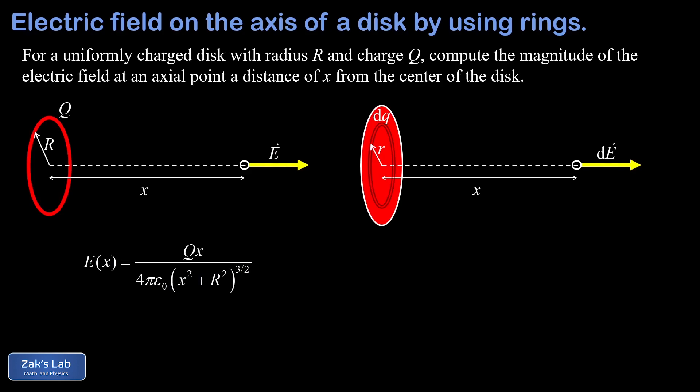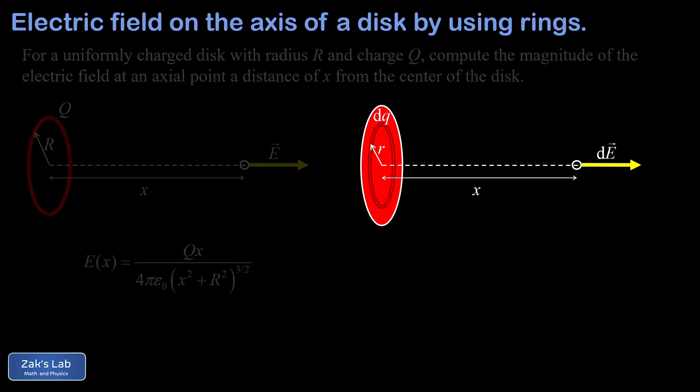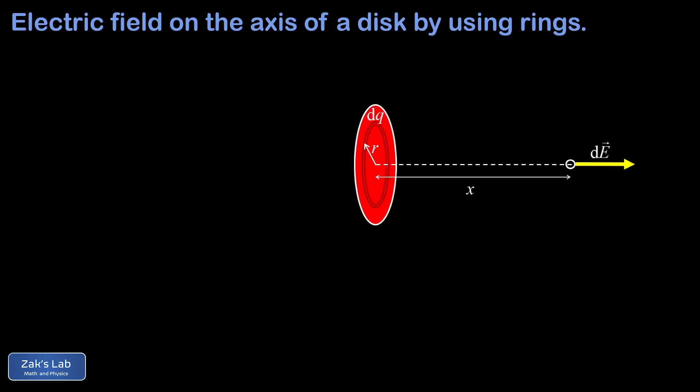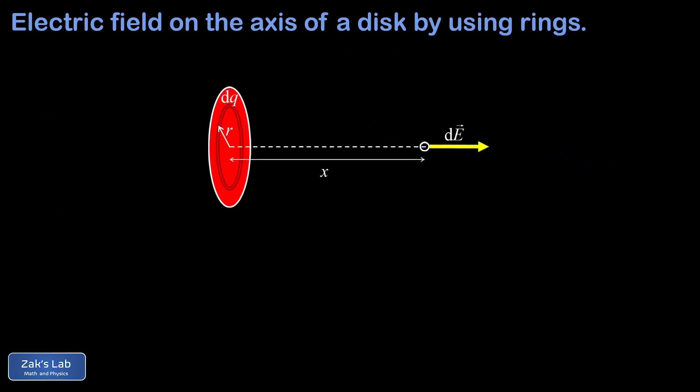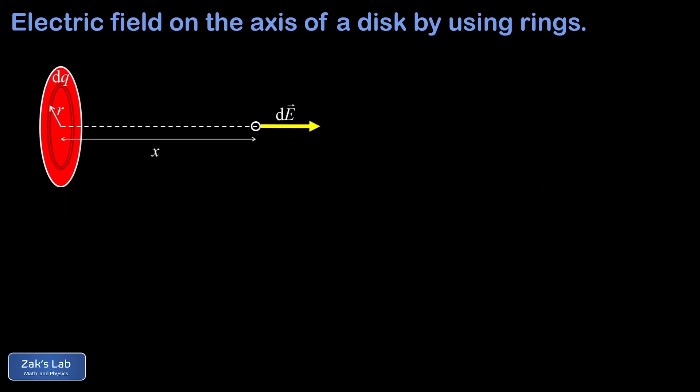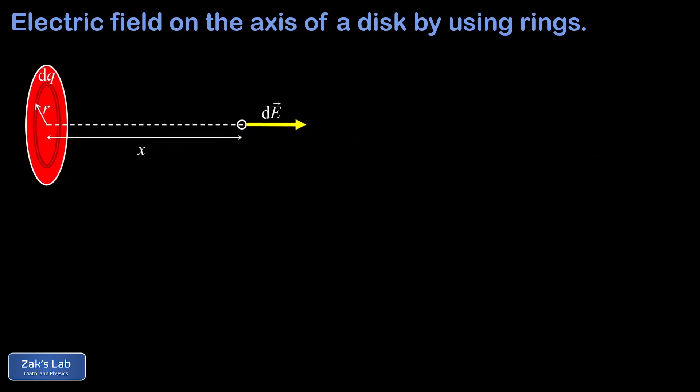Each of these rings will contribute an incremental amount dE to the total electric field. If all goes well, we should be able to compute the field contribution due to a single ring, and then use integration to add up all the contributions. Before we write down the field contribution due to this ring, we need a quick note on area charge density.